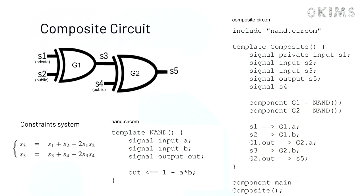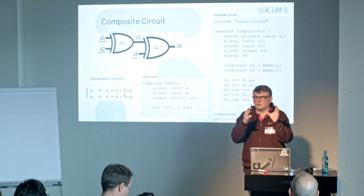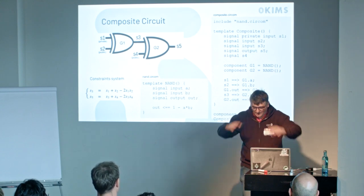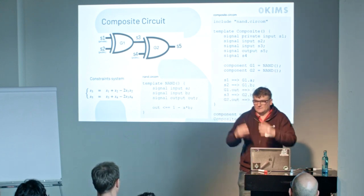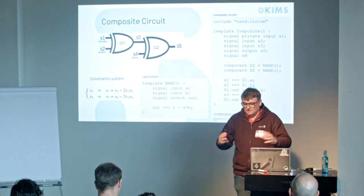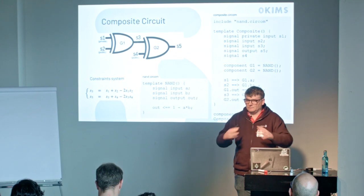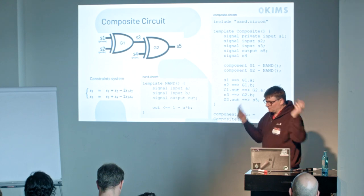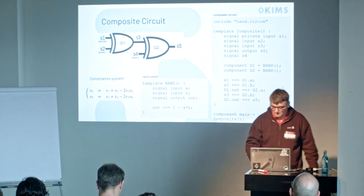What else can you do in CIRCOM? CIRCOM is mainly a DSL language. The idea is that you can build circuits in a bottom-down way. You have a big circuit decomposed into smaller circuits, which are decomposed into smaller and smaller ones — a full hierarchy. Very much like designing electronics where you put small circuits together to make bigger ones, and you end up building whatever you want: hash functions and anything you can imagine.